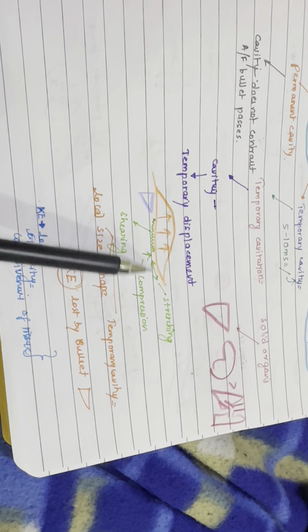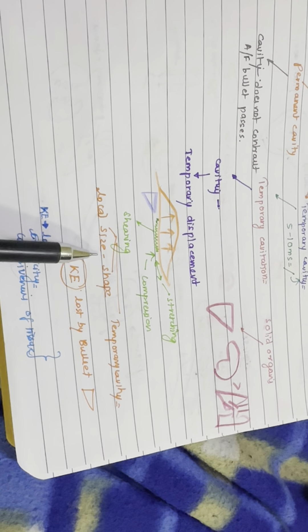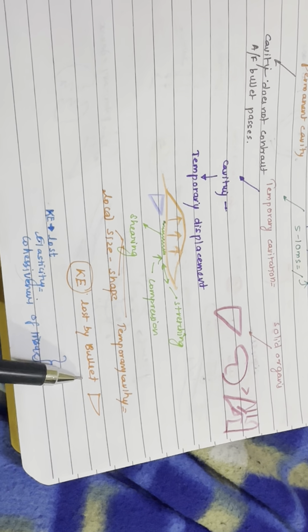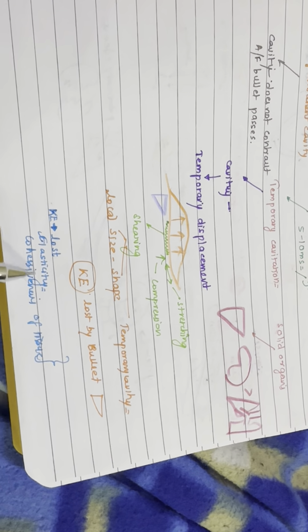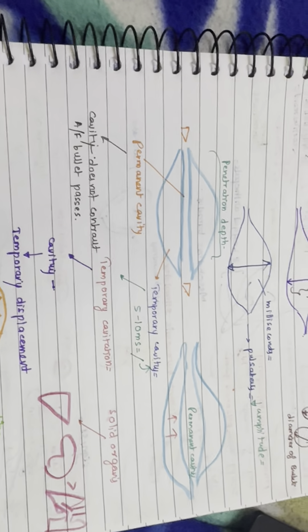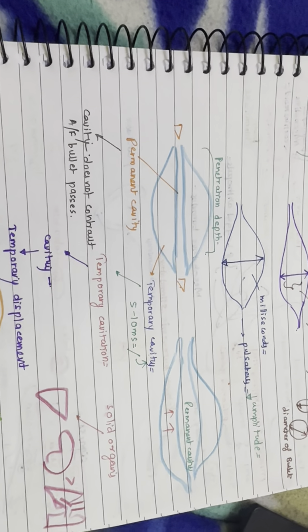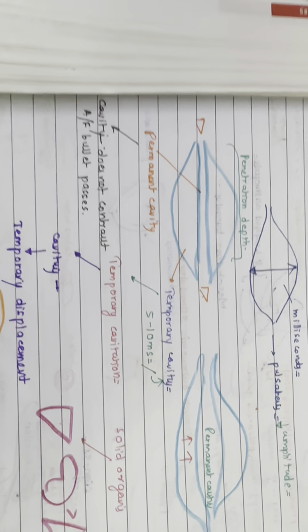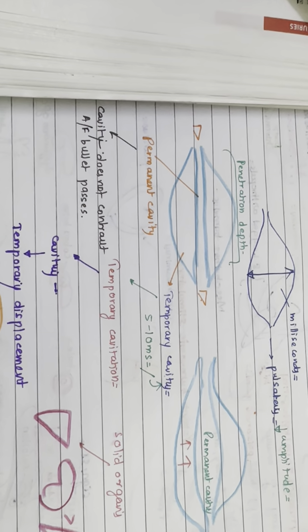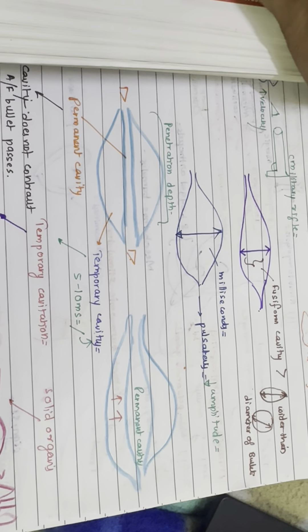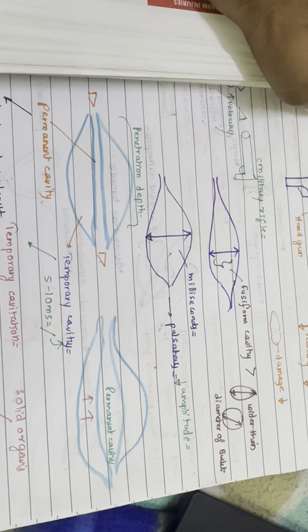Cavitation involves stretching and compression, and changes in size, shape, and temperature of the cavity can indicate the velocity of the bullet. The permanent cavity does not contract after the bullet passes, persisting between 5 to 10 milliseconds.